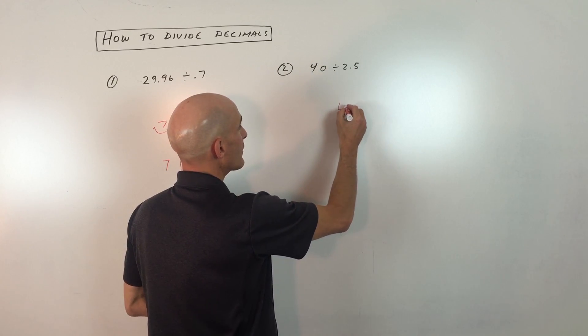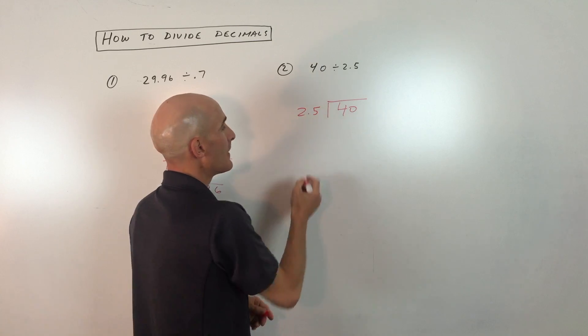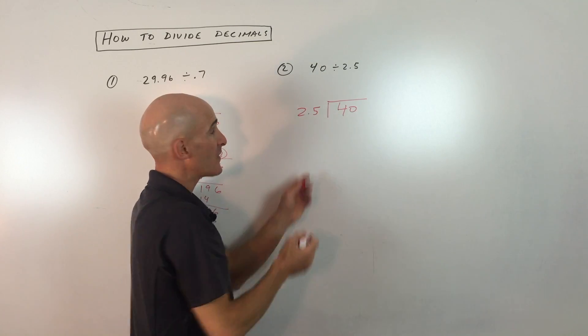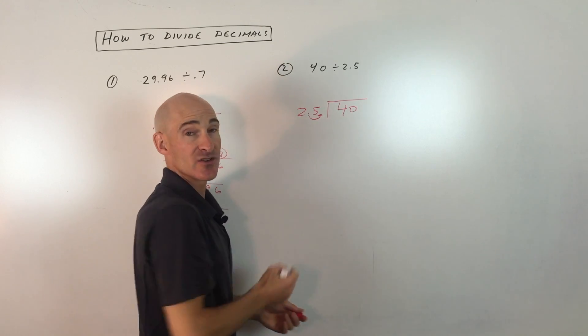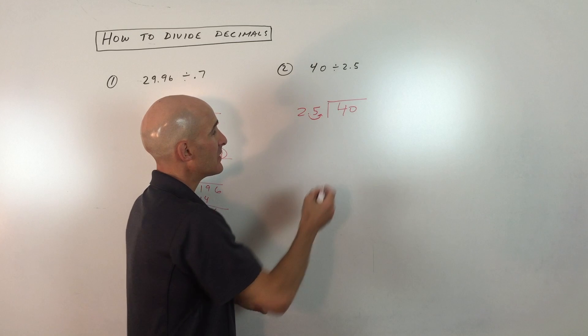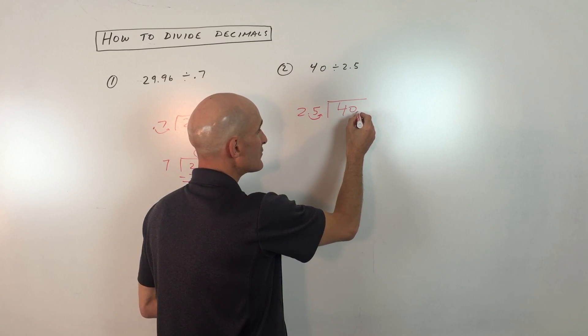Let's set it up. We've got 40 divided by 2.5. You see this number on the outside, we want this to be a whole number. So we're going to make it a whole number by moving the decimal point one place to the right. And if we do that to this number, we also want to do the same thing to the number underneath the division bar.